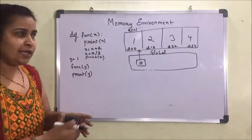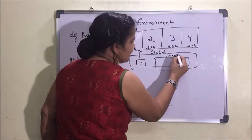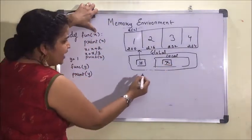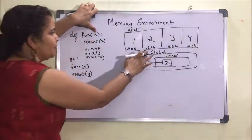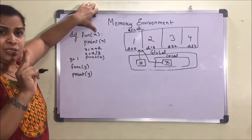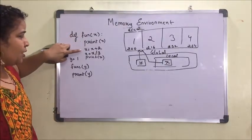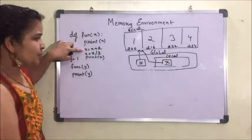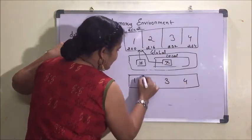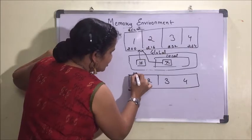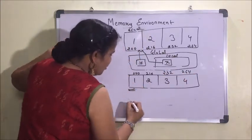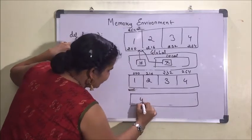After the function call is made, a local environment is created inside the global environment. Because it is accepting x, one more variable x is created, and x will also point to 1 — so the reference count becomes 2, because two variables are pointing to the same value. After printing the value, the increment is done by 2, so the value of x becomes 3. The memory locations are: 200, 216, 232, and 264.